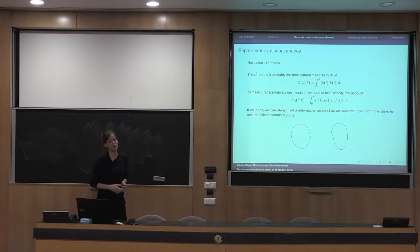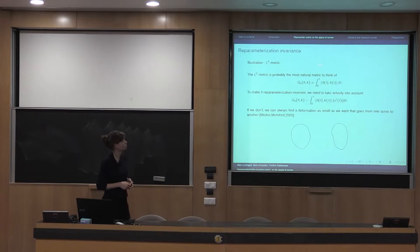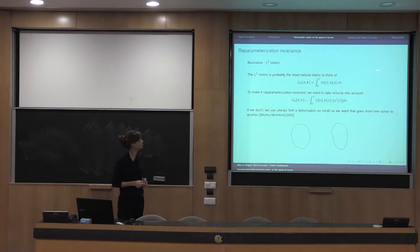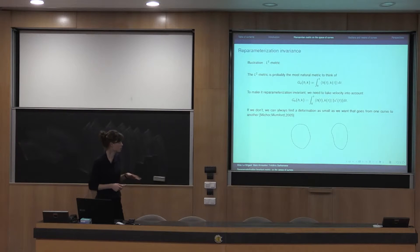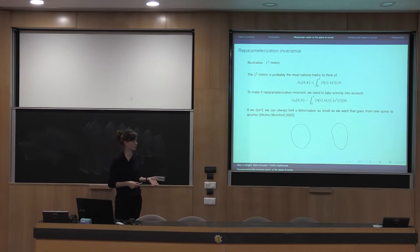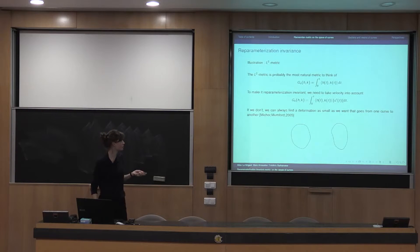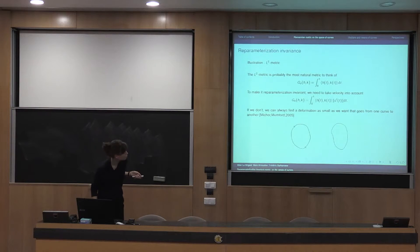To illustrate the importance of reparametrization invariance, let me briefly discuss the L2 metric, probably the most natural metric on the space of curves. To make it reparametrization invariant, you need to take into account the velocity — you include the norm of the velocity so that when you compose by the same diffeomorphism phi, a change of variables gives you the equivariance property. If you don't do that, you can always find a deformation as small as you want going from one curve to another — an example given by Michor and Mumford.